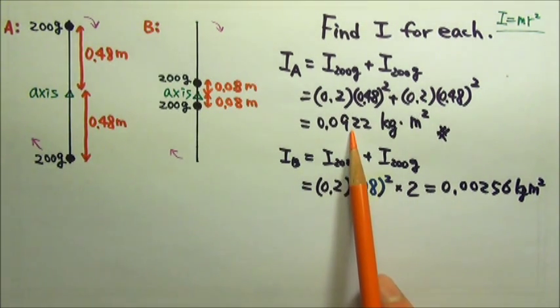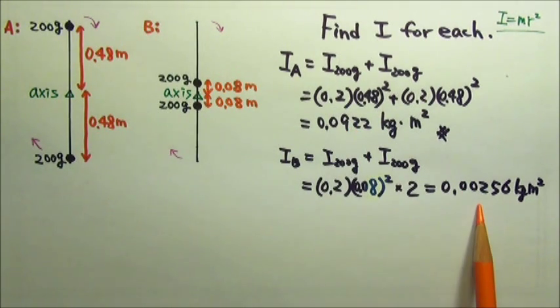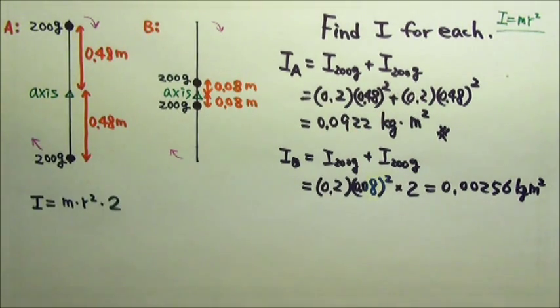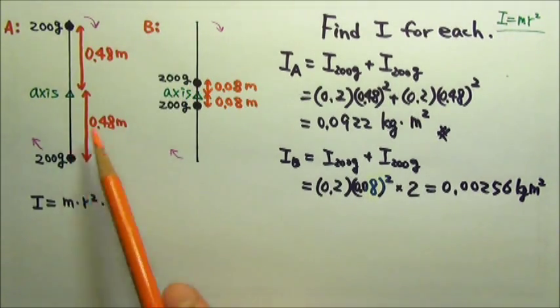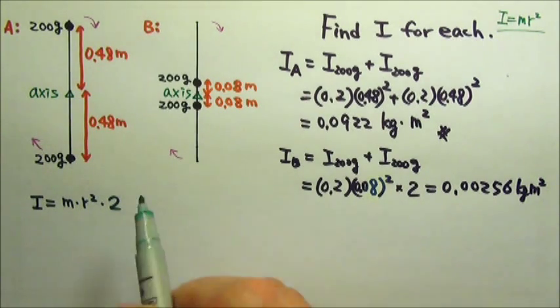And this happens to be 36 times of that. Because for both cases, I equals mr squared for one piece of point mass, and then times 2 because there are two of these in each system. So they both have two pieces of point mass.